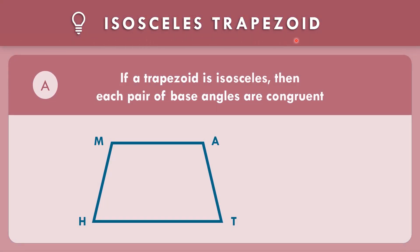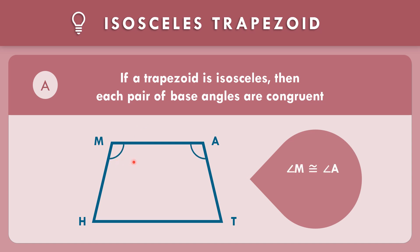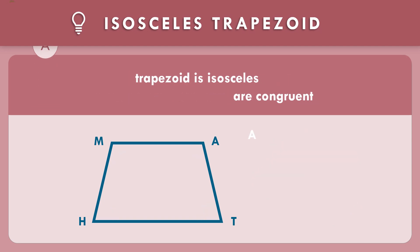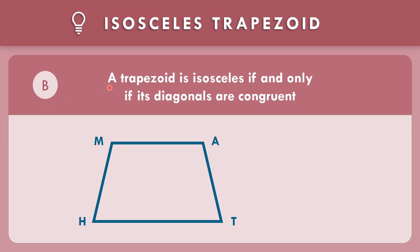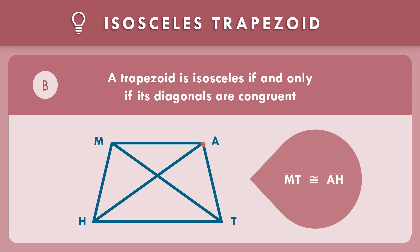What are the different properties of the isosceles trapezoid? Property A: if a trapezoid is isosceles, then each pair of base angles are congruent. The base angles are angle M and angle A, and another pair is angle H and angle D — so angle M is congruent to angle A, and angle H is congruent to angle D. Property B: a trapezoid is isosceles if and only if its diagonals are congruent, meaning line segment MT is congruent to line segment AH.